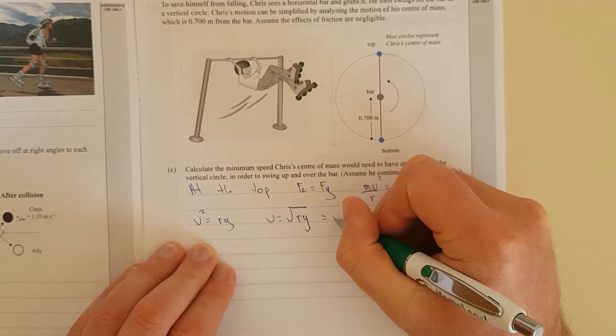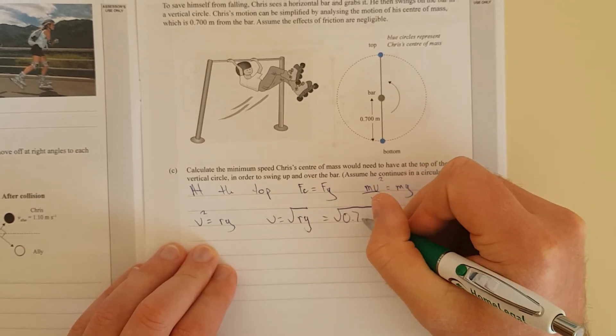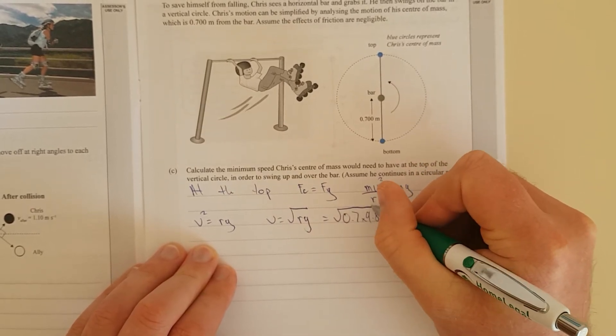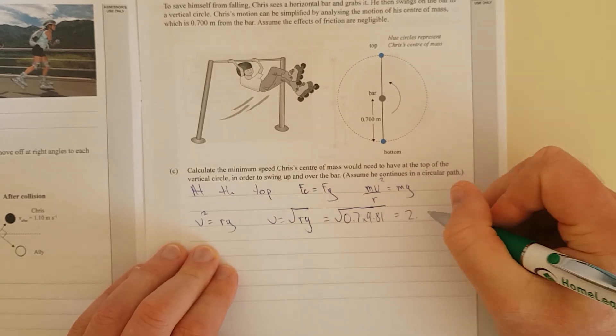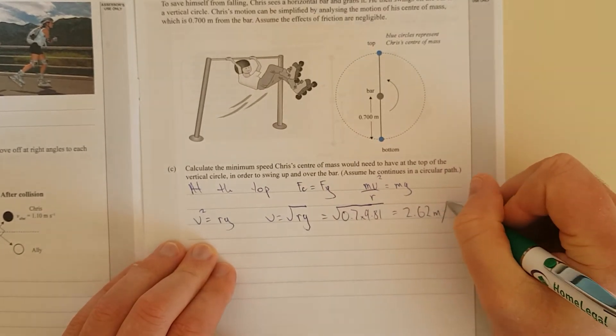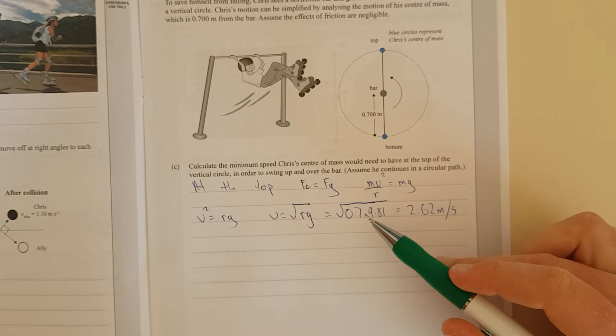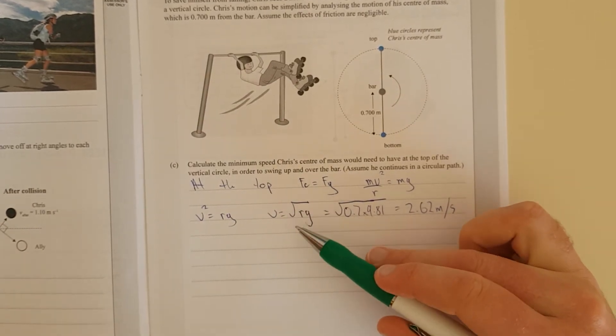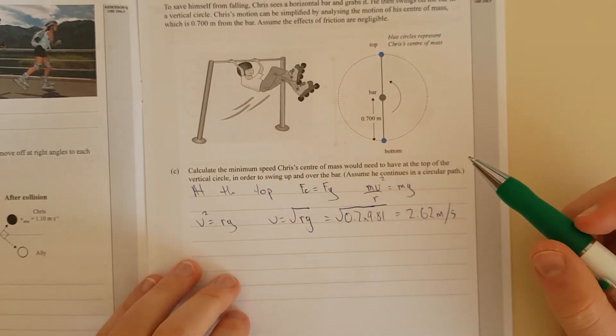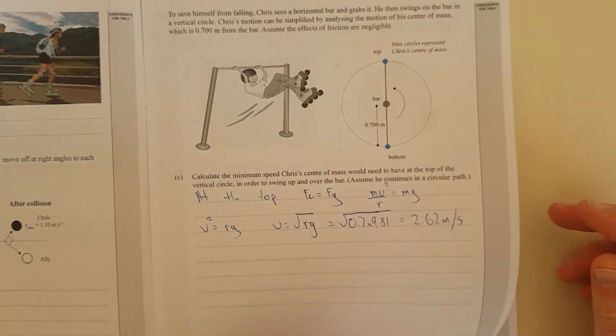That equals square root of 0.7 times 9.81, and that is 2.62 meters per second. Normally my students just memorize this formula, but that's the derivation. And I can guarantee you there'll be a free body diagram over the page.